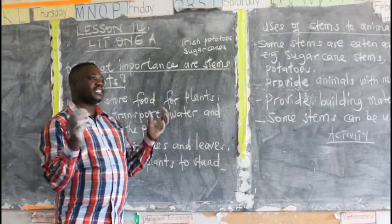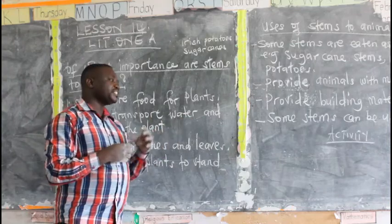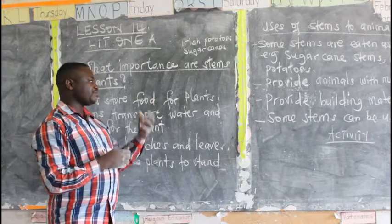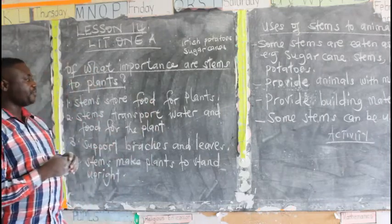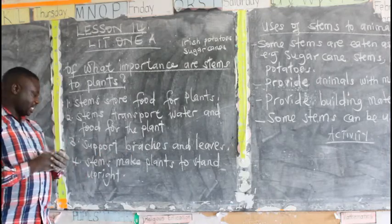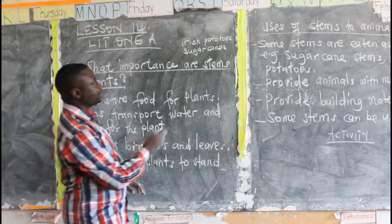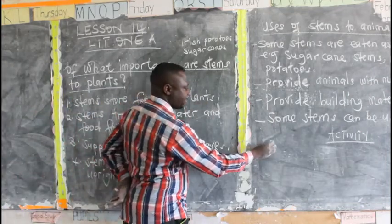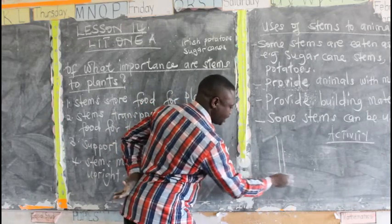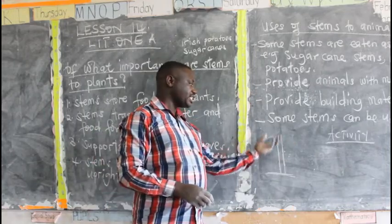Without a stem, a branch cannot be fixed or stay upright on a plant. A plant must have a stem so that a branch can be fixed firmly. Stems make plants stand upright — as we see in this diagram here. A stem makes a plant stand upright, meaning standing straight.